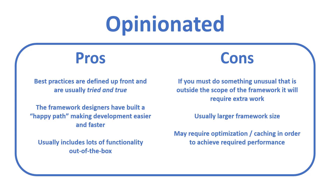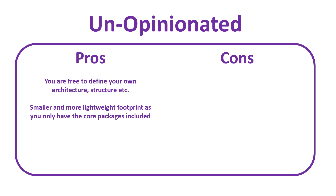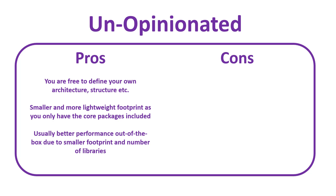To recap about opinionated frameworks: they will usually dictate the structure and the architecture, and you can lean on them — you don't have to decide on the structure and architecture yourself. For unopinionated frameworks, it's kind of the opposite: you are free to define your own architecture and structure. They will not dictate any default structure that you have to follow, so you have a lot of freedom. Usually there is also a smaller and more lightweight footprint, as only the core packages are included. ExpressJS, for instance, is described as a minimalist and unopinionated framework, so it is smaller and more lightweight than, say, Laravel. Because of this smaller footprint, you can generally have better performance out of the box.